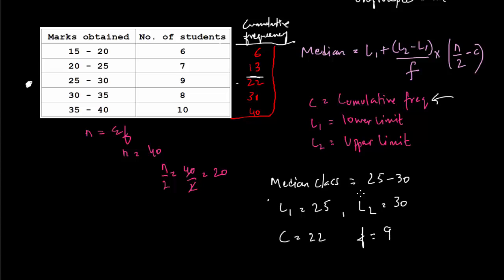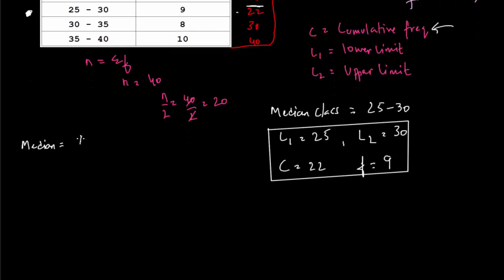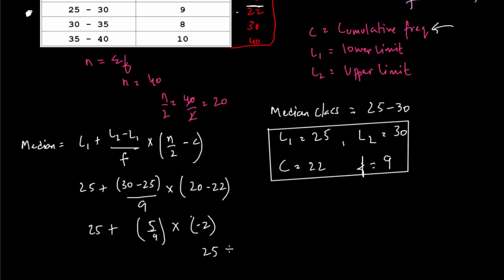Now all we need to do is replace all these values into the original formula. So it's going to be 25 plus 30 minus 25 by 9 into 20 minus 22. And that's going to give us 25. So the median for the following frequency distribution table is 25.